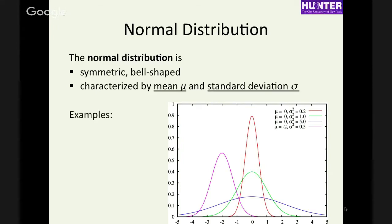What you need to know about the normal distribution: it's symmetric, it's bell-shaped, and it's characterized by just two numbers — the mean and the standard deviation. If you know those two numbers, you know everything about a particular normal distribution. Here are a few examples: in red we have mean zero and standard deviation squared (variance) of 0.2; in green, mean zero and variance of one, so it's wider; and another with mean zero and variance of five, so it's really wide.